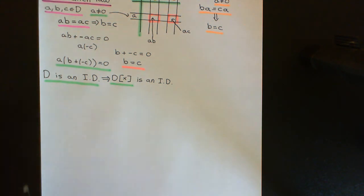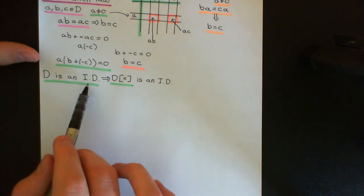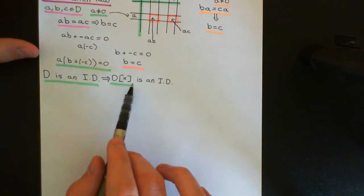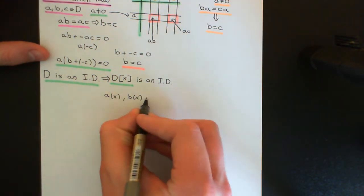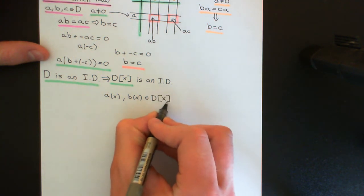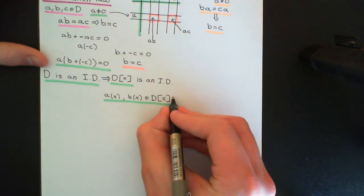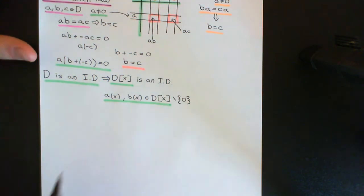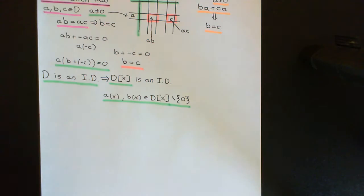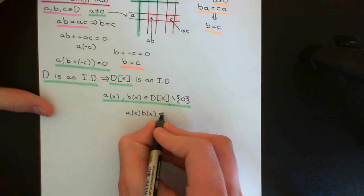So why is that going to be the case? If D is an integral domain, then multiplying two non-zero elements will not give zero. What I want to prove is that if I take two non-zero polynomials — say a(x) and b(x), which are both non-zero polynomials from the polynomial ring over D — then if I multiply these two together, it's also going to be a non-zero polynomial.